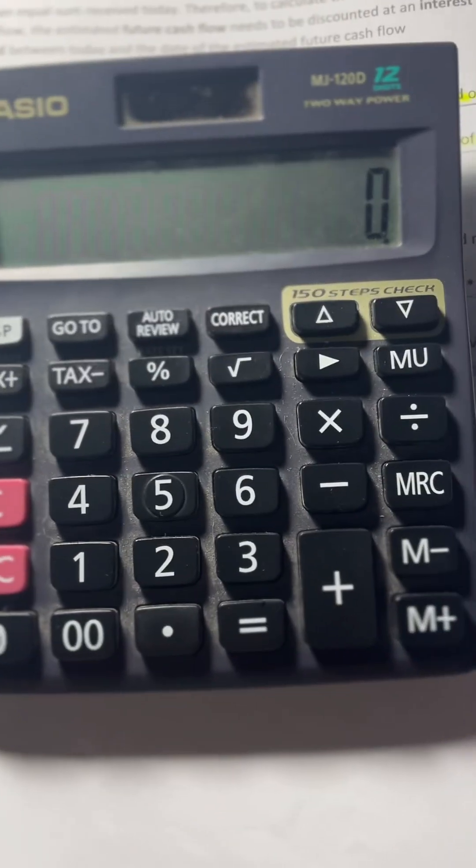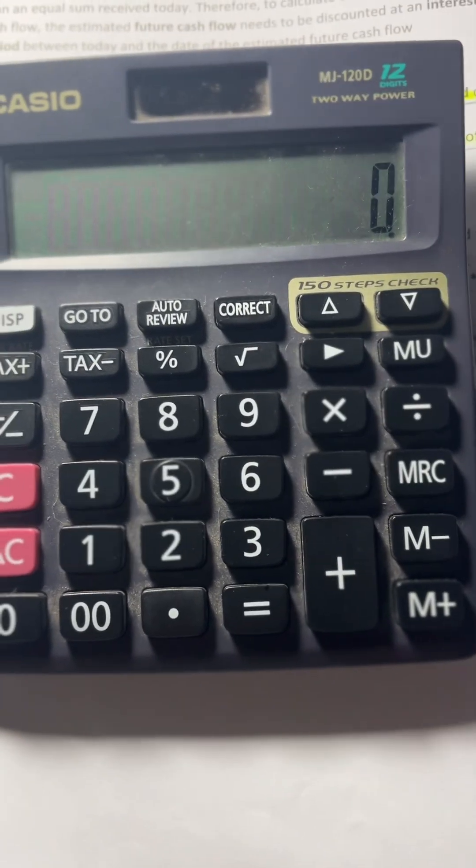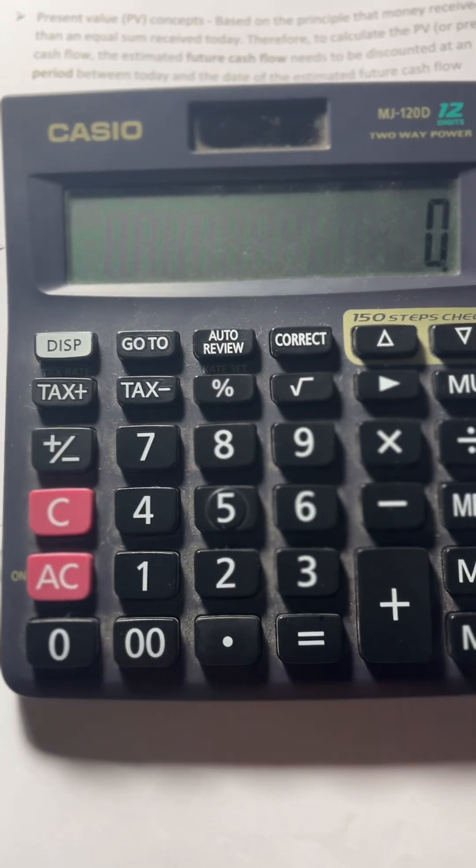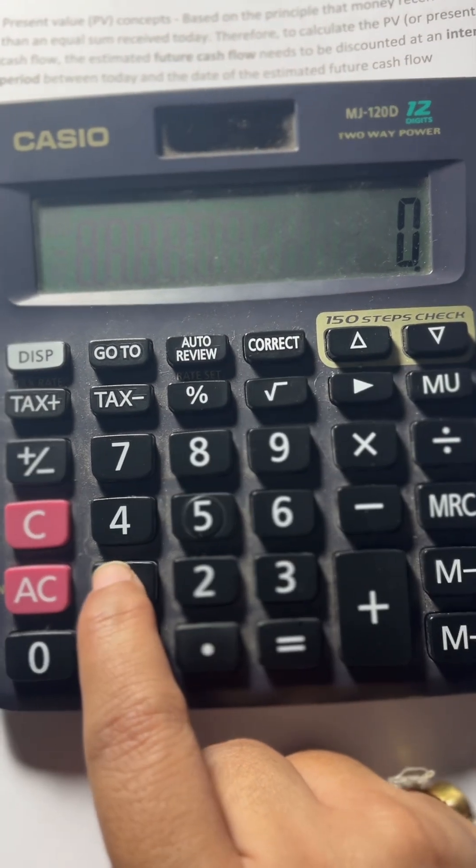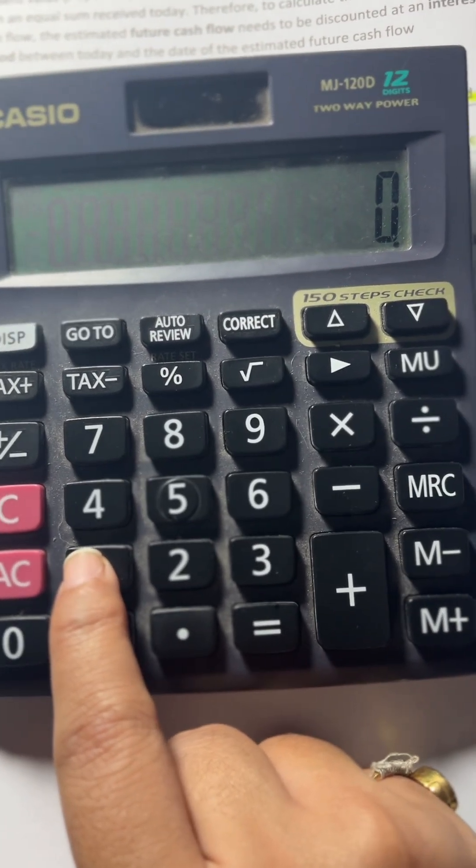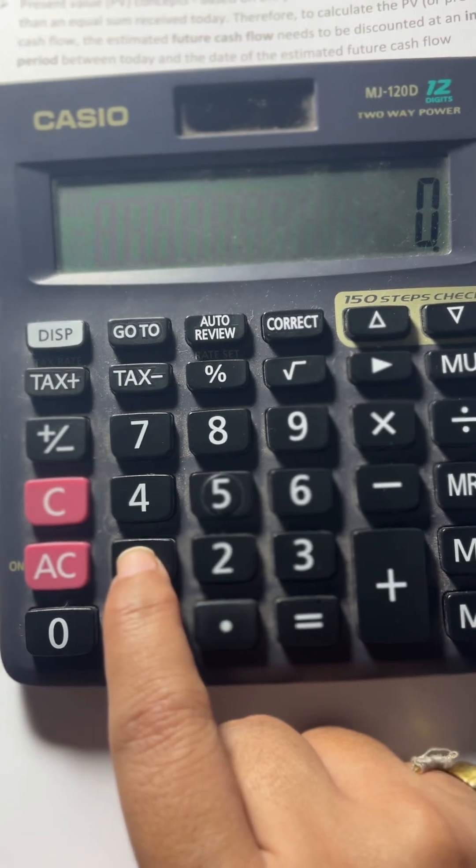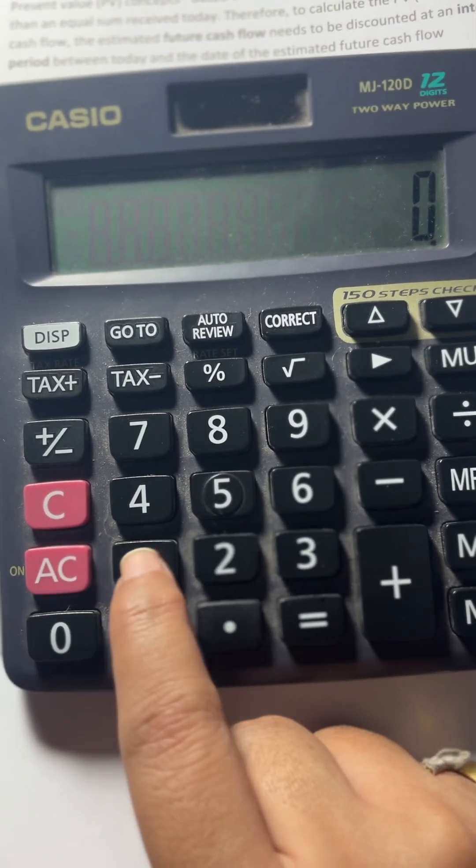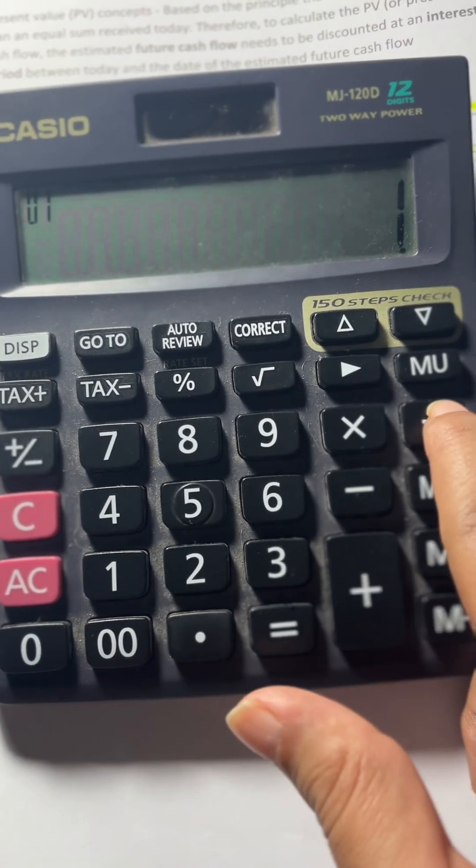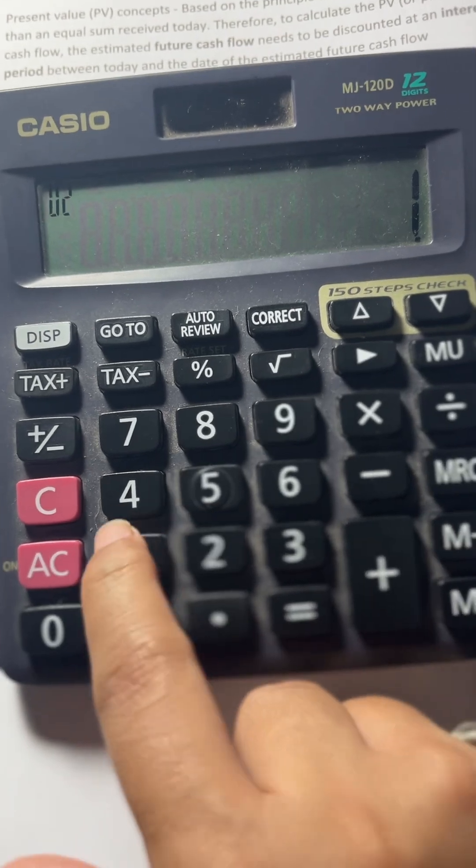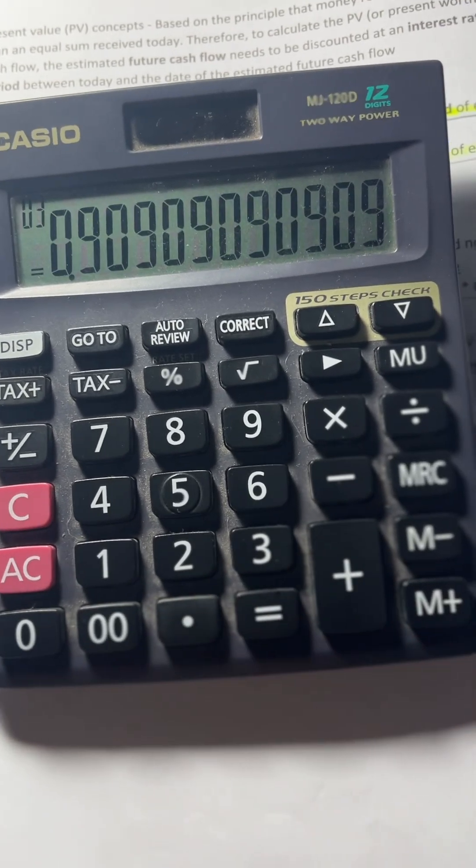Hello guys, we will be calculating the present value of annuity factor. We are taking 10% as an interest rate and 5 years as the time period, so we'll be using 1 divided by 1.10, which